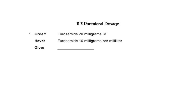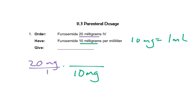This says that we want to do furosemide 20 milligrams IV. So we're going to start with 20 milligrams over 1, and this again tells us that we have 10 milligrams equal to 1 milliliter per milliliter. So we're going to write that as a fraction. We're going to put the 10 milligrams on the bottom and the 1 milliliter on top.